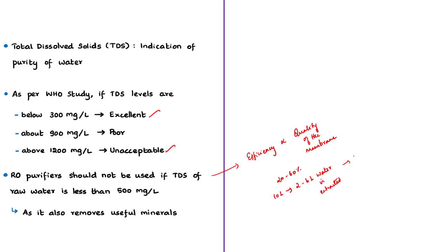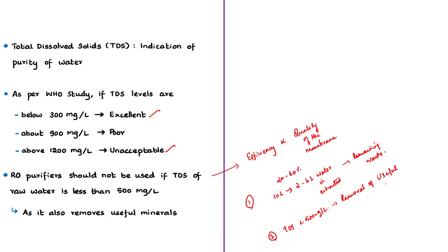For every 10 liters of impure or raw water, only about 2 to 6 liters of purified water is extracted and the remaining water goes as waste. In addition, RO systems should not be used if the TDS of the raw water is less than 500 milligrams per liter. This is because if RO purification is applied to water with TDS below 500 milligrams per liter, even the useful minerals present in that water will be removed along with the unwanted impurities, which is not good for health.